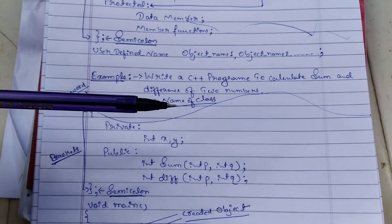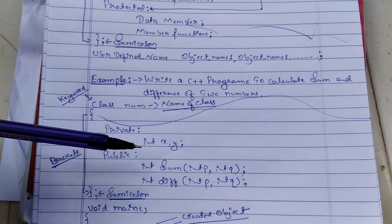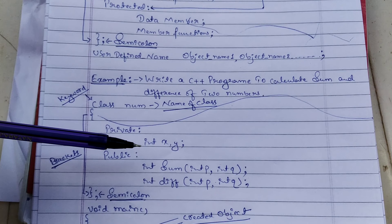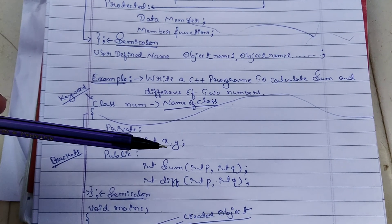The private data members are integer variables x and y. Next, public is the access specifier. For return types of member functions, I have taken 'sum' as a method, or we can call it a member function.